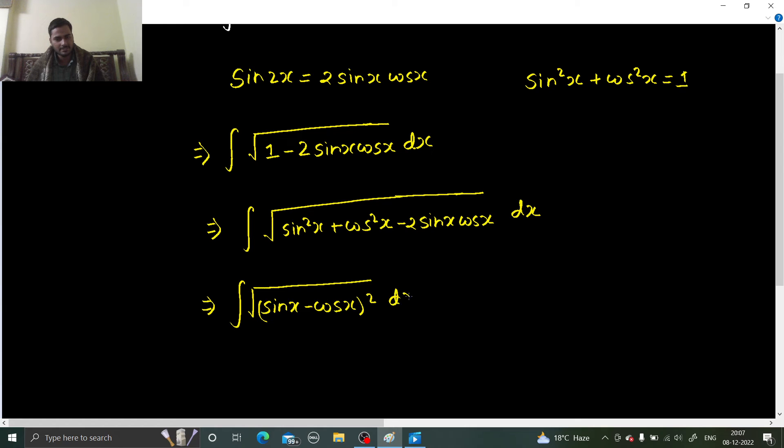In the next step, this square root and square will cancel each other and we will get simply sin x minus cos x dx.